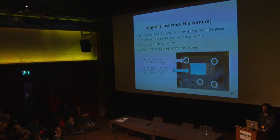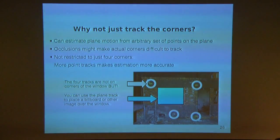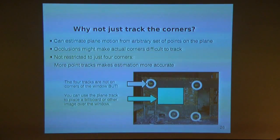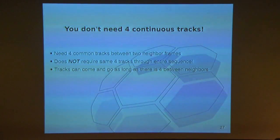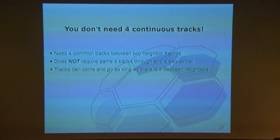One question we get is: why don't you just track the corners — a corner pin? There's no restriction on using corners. The plane is defined by any four or more points that happen to exist on the plane. In practice, occlusions may mean you can't actually see the four corners of a screen or object you want to place something on top of — that's why we don't call it a corner tracker. And if you have more points, the estimation will be more accurate. You don't need four continuous tracks; tracks can come and go. As long as between each subsequent frame there are at least four tracks, planar tracking should work fine.